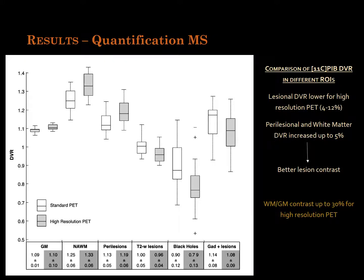The quantitative impact of the partial volume correction application on patient images is reported in this box plot. Each box collects the mean value for a specific clinically relevant tissue region for all the patients. The average PIB quantification in the lesional tissues is significantly lower for the high-resolution PET compared to standard PET. On the other hand, there is a consistent increase of the quantification in the perilesional area, in the normal appearing white matter, and in the grey matter, hence returning lesions with improved contrast. The standard deviation of the two image modalities is comparable for all tissue regions. These results show that the high-resolution PET is more sensitive in quantifying the myelinated content of MS lesions.